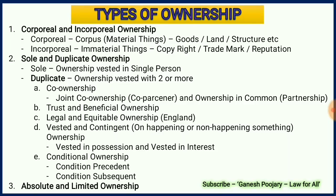There are three important types of ownership. The first one being corporeal and incorporeal ownership. If somebody is having ownership over material things like goods, land, structure, etc., they are known as corporeal ownership. Whereas if somebody is having ownership over immaterial things like copyright, trademark, reputation, etc., they are known as incorporeal ownership.